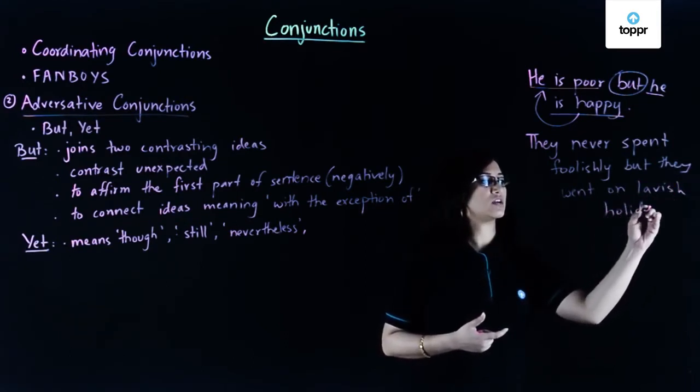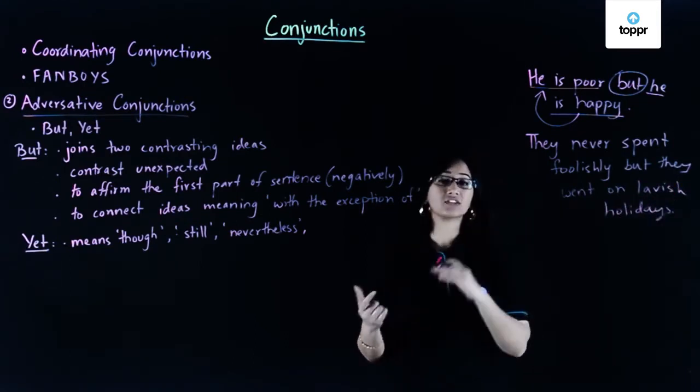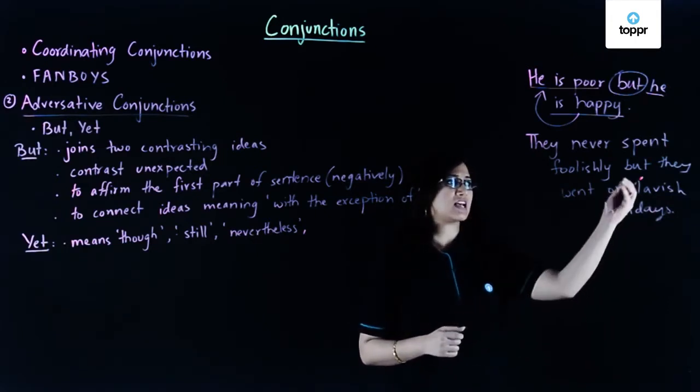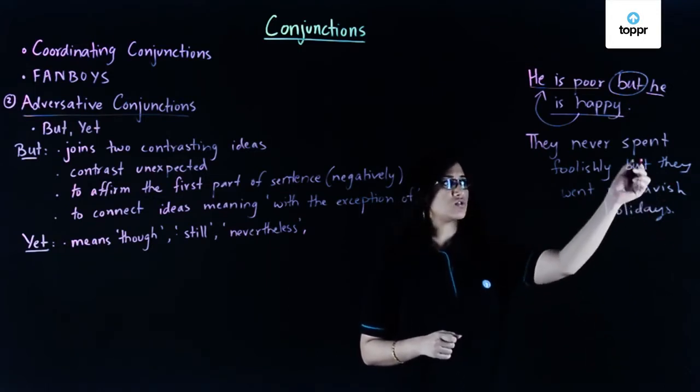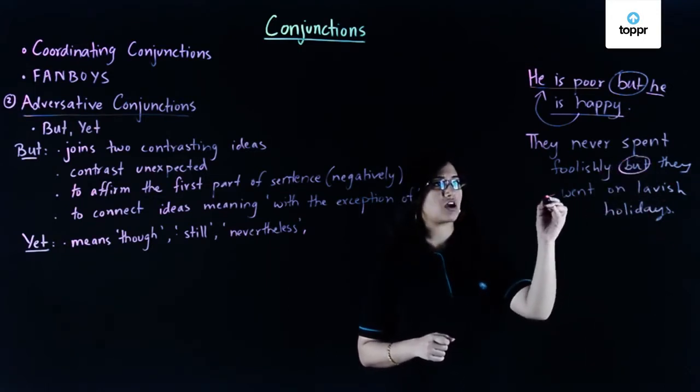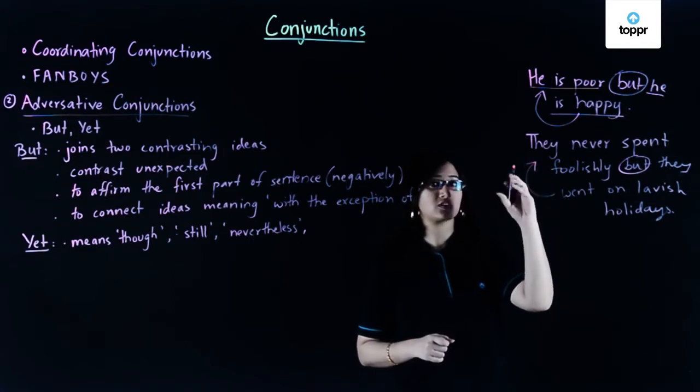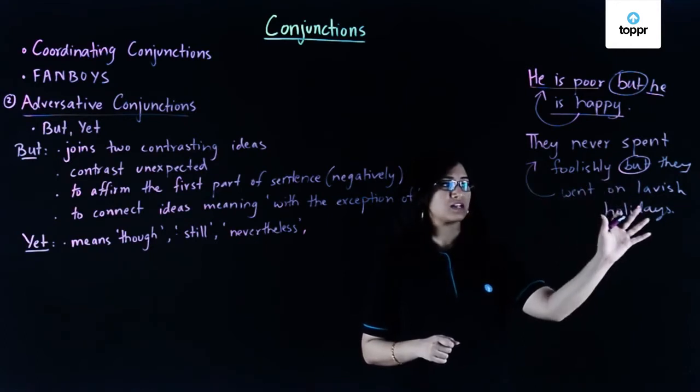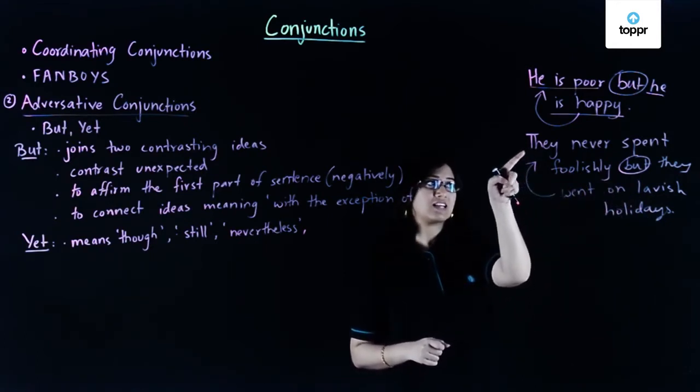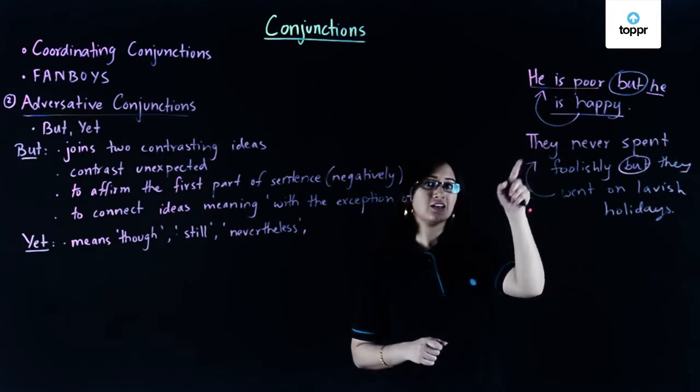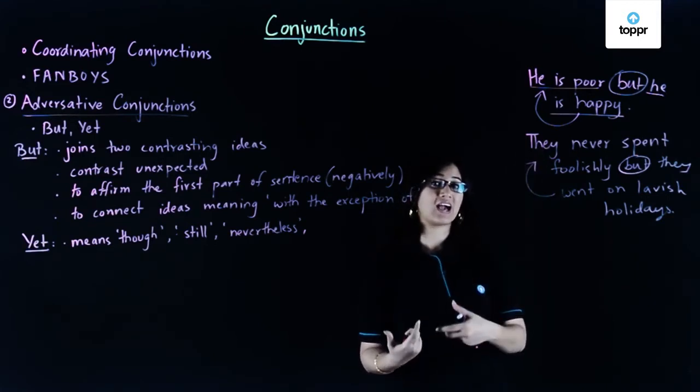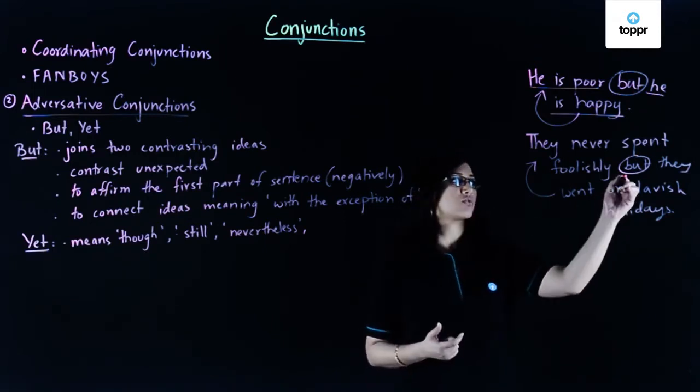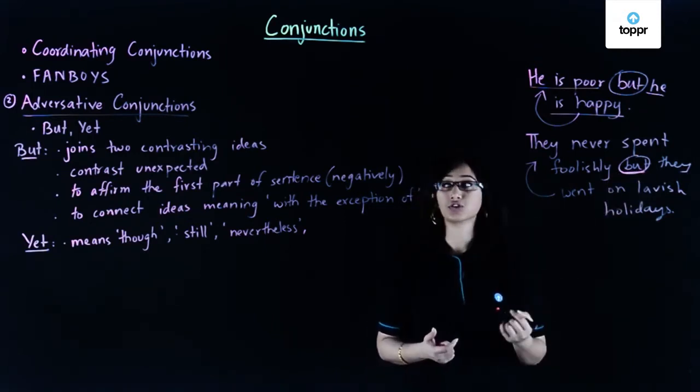So in this case we are saying that they never spent foolishly but the contrasting idea is that they went on lavish holidays. So here we have two ideas which are not making sense together—that they didn't spend foolishly but the second statement is saying that yes they did not spend foolishly but it's stating it in a negative way, that they had done something which is in contrast to what was expected. Therefore we used the coordinating conjunction but.